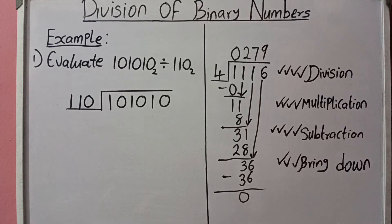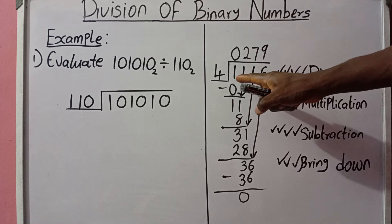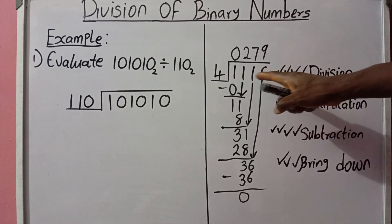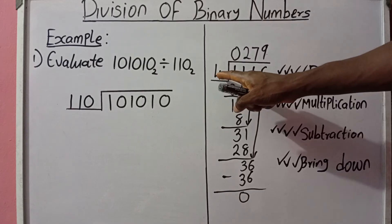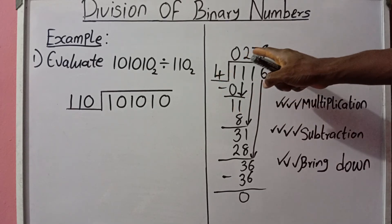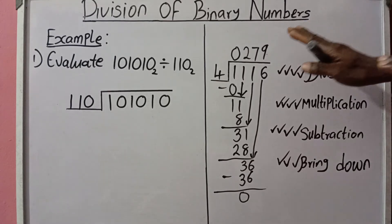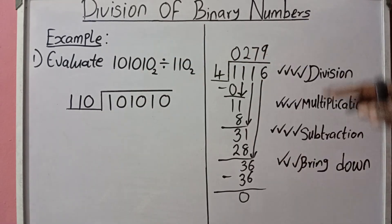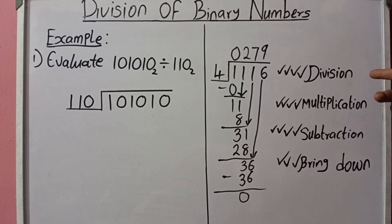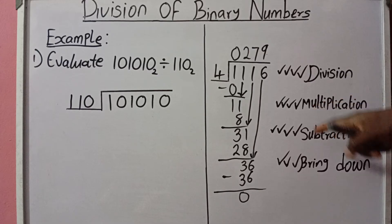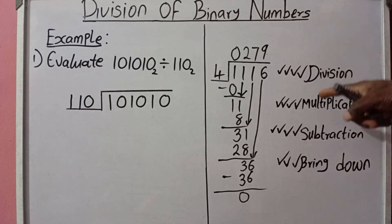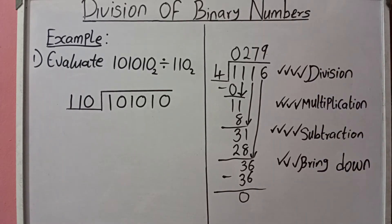Once we have zero as the last result, we have finished the whole process. To check: 1116 divided by 4 equals 279 — you can verify this on a calculator. So that is the simple way of approaching any long division: Division, Multiplication, Subtraction, Bring down — Dr. Michael Studied Biology. Now let's move to the main binary problem.